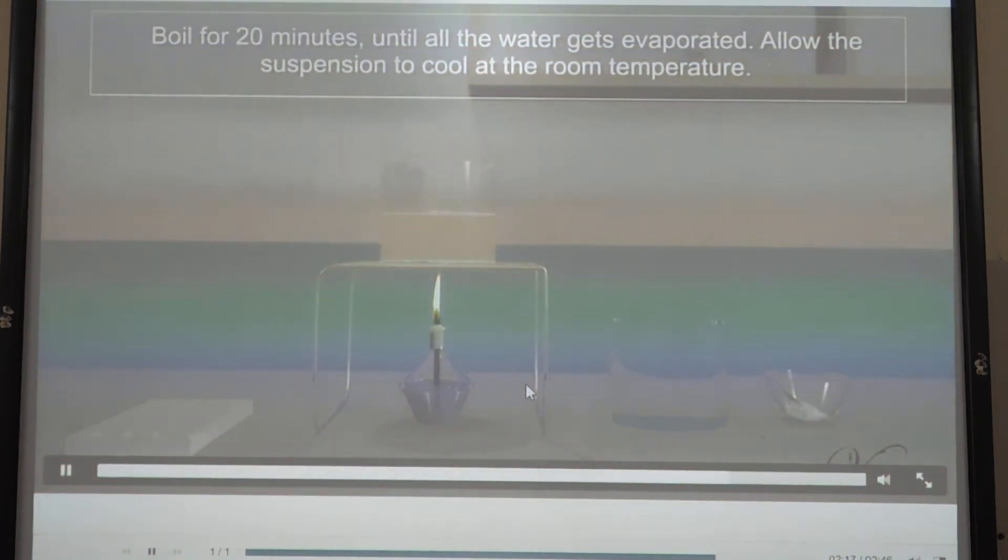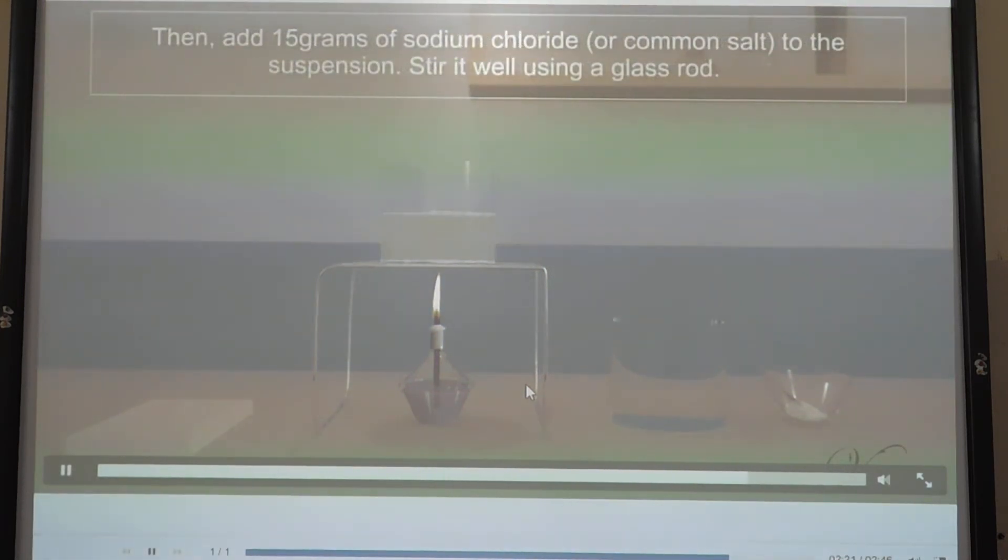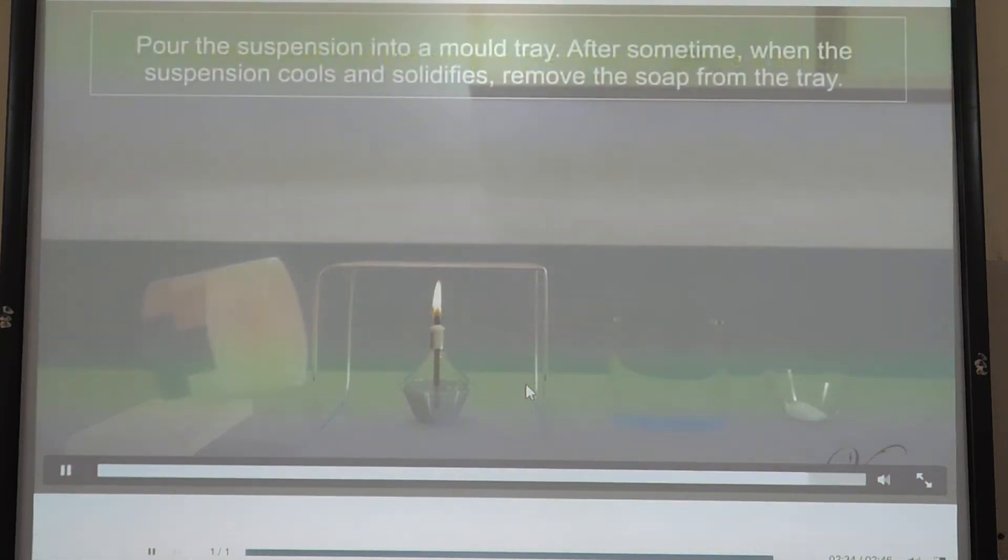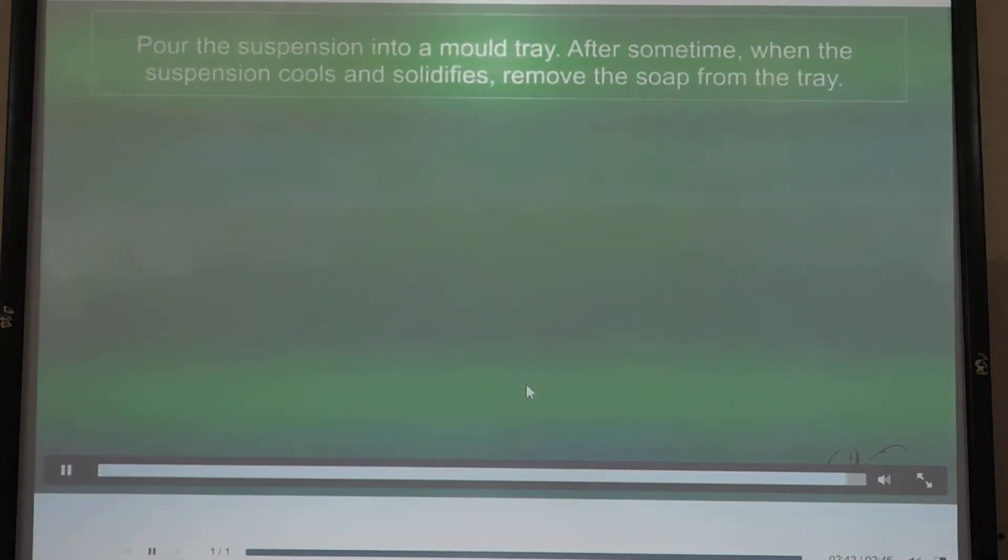Allow the suspension to cool under room temperature. Then add 15 grams of sodium chloride or common salt to the suspension. Stir it well using a glass rod. It is observed that the soap is precipitated out as a solid. Pour the suspension into a wooden tray. After some time, when the suspension cools and solidifies, remove the soap from the tray.